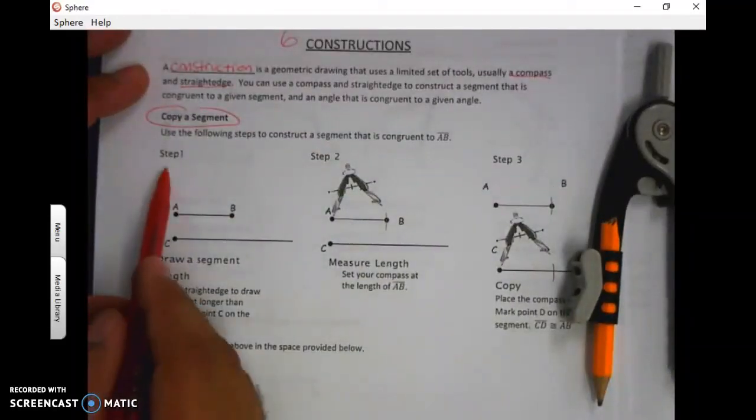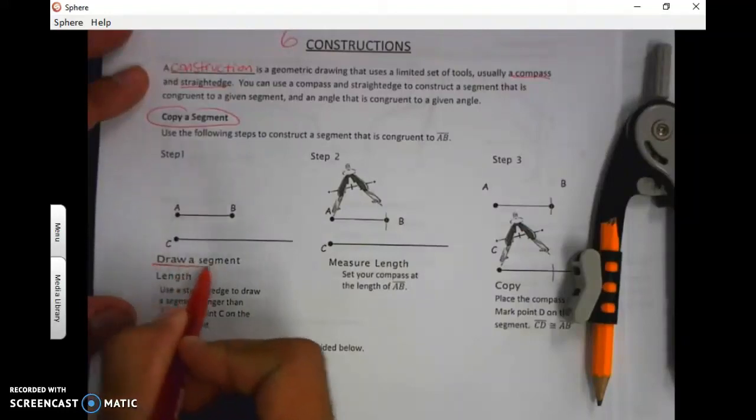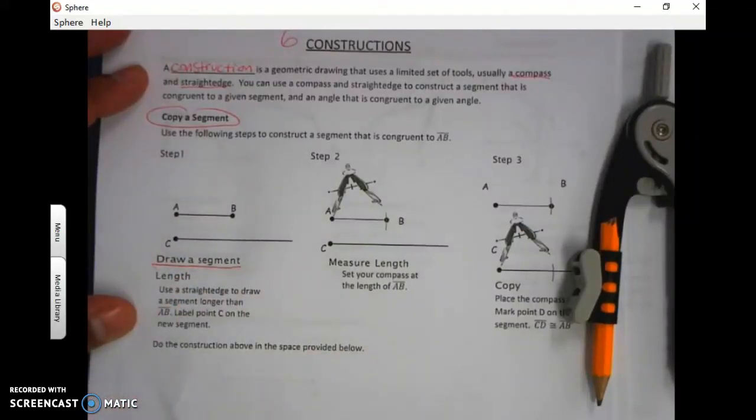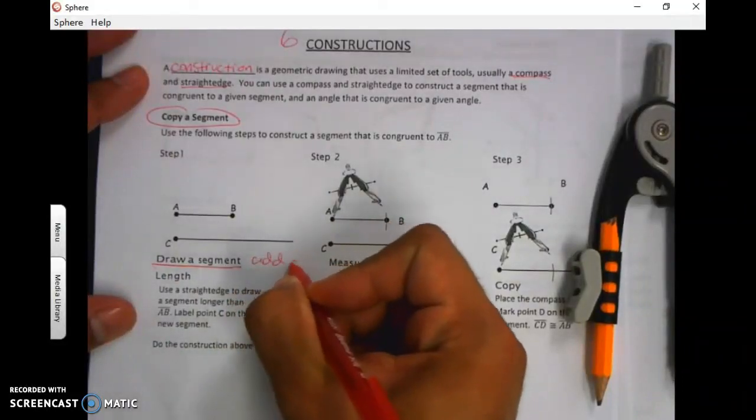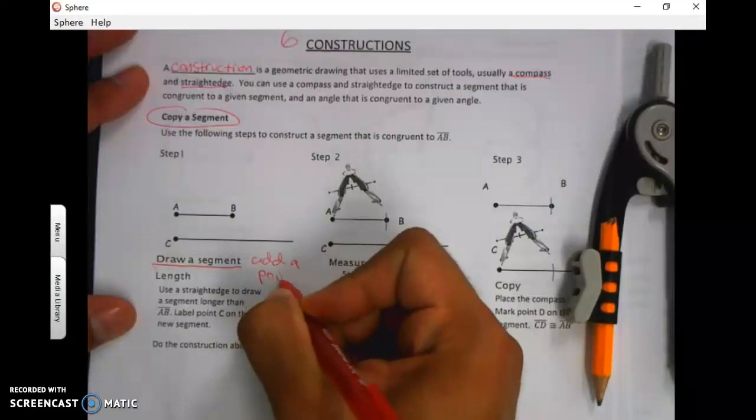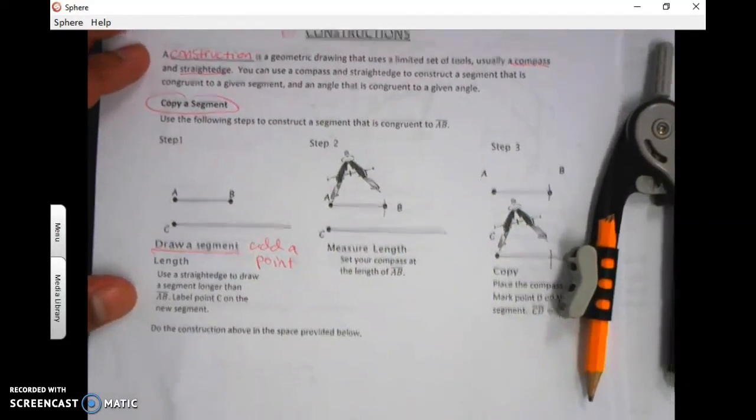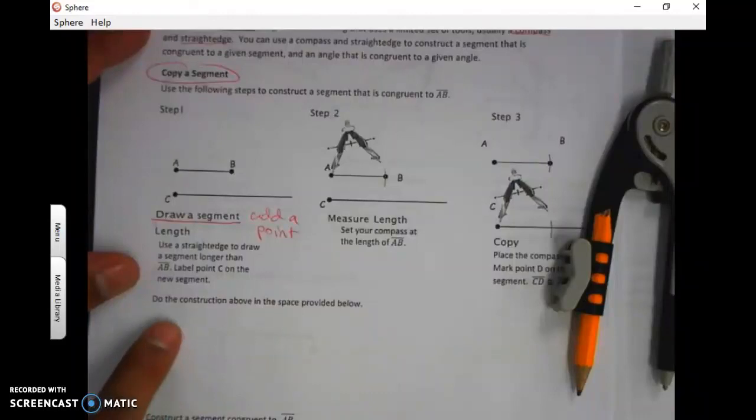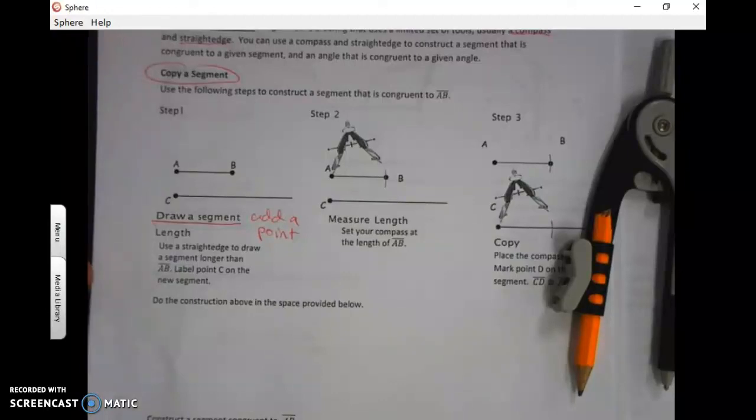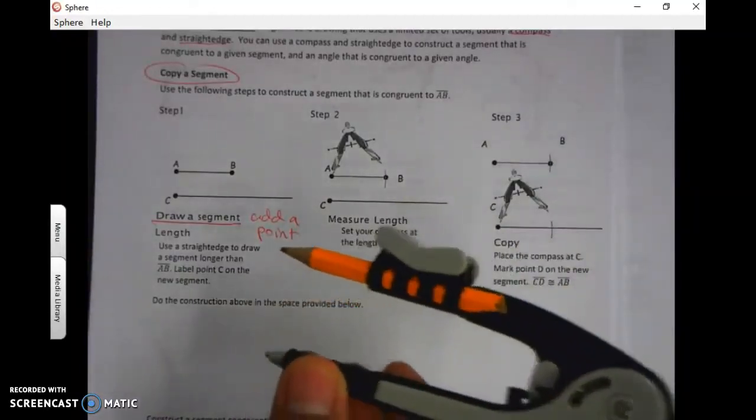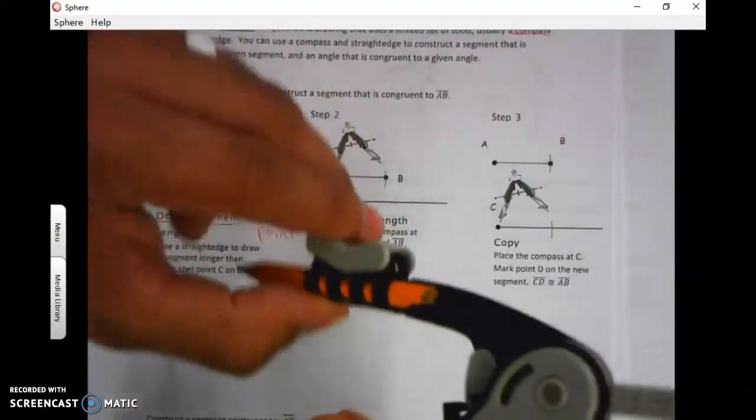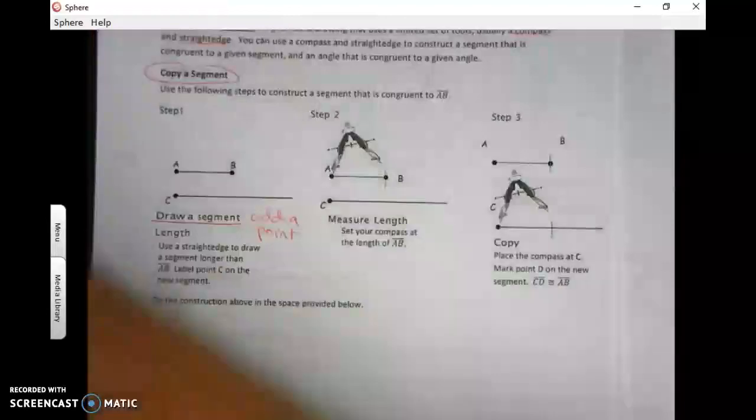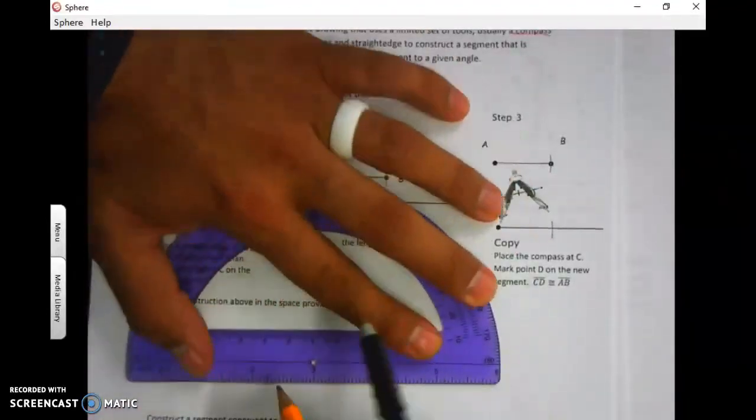So look at step one. What does it say? Draw a segment, and I'm going to add a point near the end of it. So what I want you to do in this little space down here where it says 'do the construction,' we're going to do the construction. All right, now you can write with the pencil on here, but what I said earlier, these are fragile. Just be careful that you're not pushing down too hard. You don't want to bust it up or break the tip.